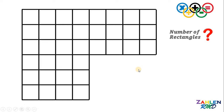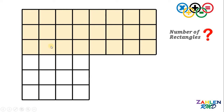First, we count all rectangles in the first colored grid. Then we add the total from the second colored grid. Finally, we subtract the total number of rectangles in the blue overlapping region, because that is their overlapping area. Now, since we have our plan, let's carry it out.